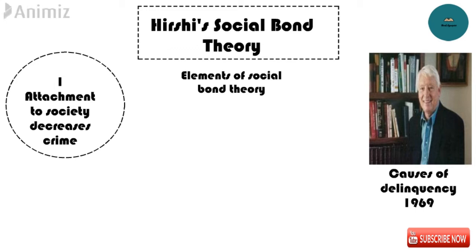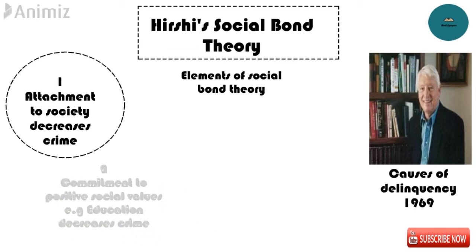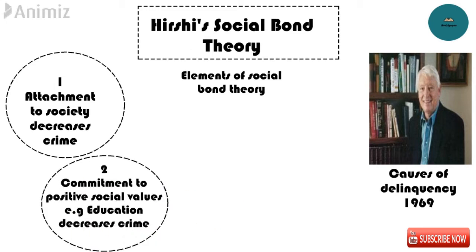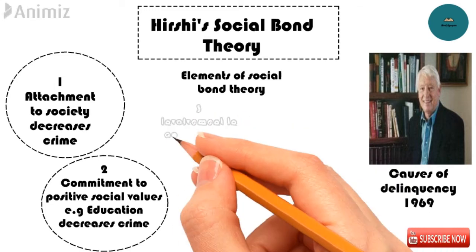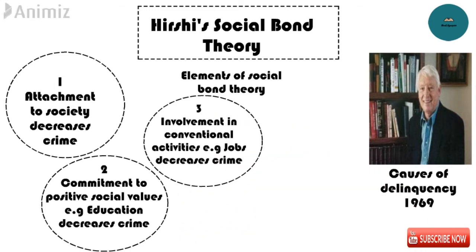The second element of Social Bond Theory is commitment. A person's commitment to conventional values — such as getting an education, saving money for the future, adopting a career, and other goals — motivates them towards conformity and prevents them from deviance and crime. The third element is involvement.